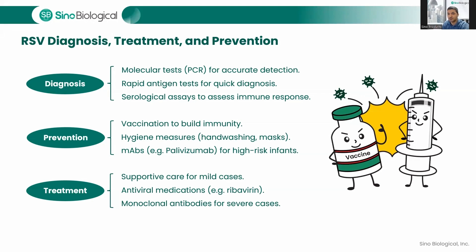Therapies for RSV infection have been studied since the 1960s. On May 3rd, 2023, the first RSV vaccine, ArexVy, was approved by the FDA for individuals 60 years of age and older — a major milestone. Treatment for mild cases includes supportive care such as maintaining hydration, controlling fever, and ensuring proper rest. Antiviral medications such as ribavirin can be used in severe cases, but their use is limited due to potential side effects and lack of clear evidence for efficacy. In recent years, monoclonal antibodies have emerged as a promising treatment option for severe RSV infections, helping to neutralize the virus and support the patient's immune response.